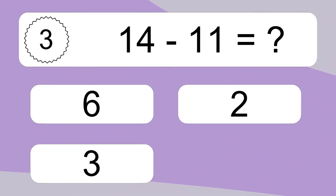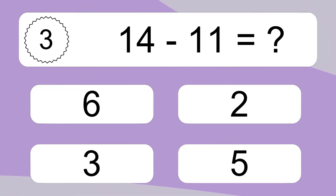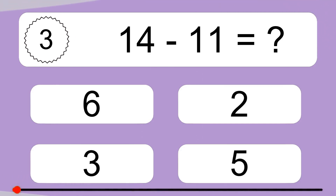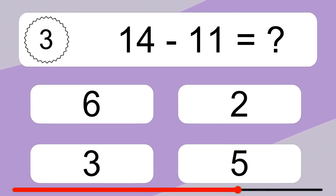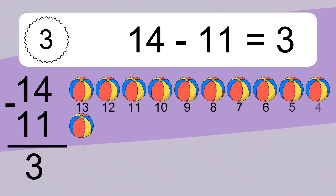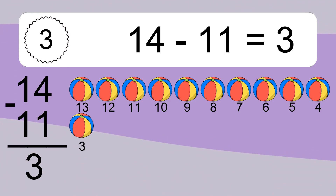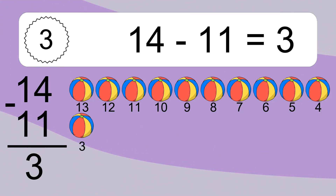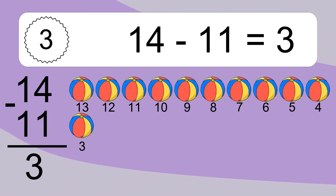14 minus 11 equals what? 14 minus 11 equals 3. Let's count it: 13, 12, 11, 10, 9, 8, 7, 6, 5, 4, 3.